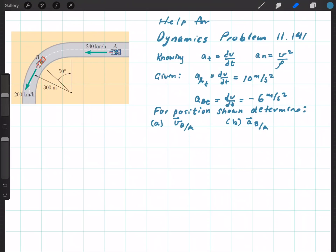For part A, rho would be equal to infinity because we're on a straight portion of the track. If rho is equal to infinity, then v squared over rho or over infinity would approach zero. And so we would say that the normal component of acceleration for car A is going to be zero.